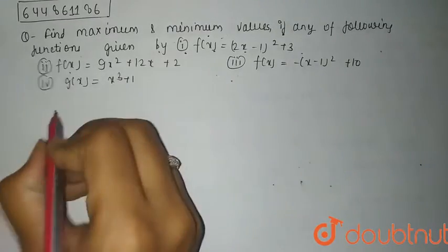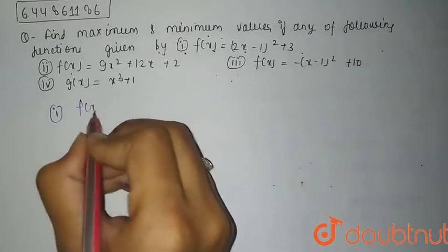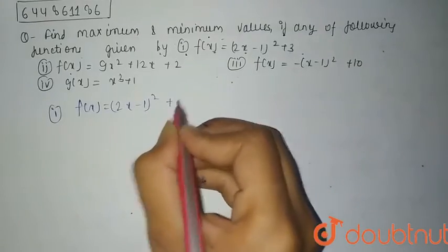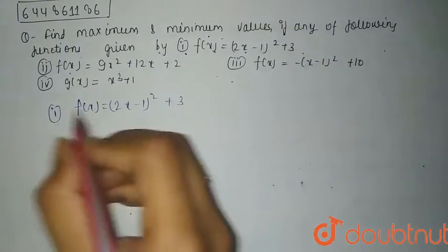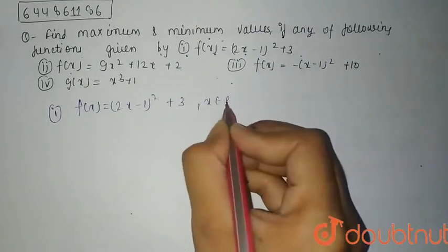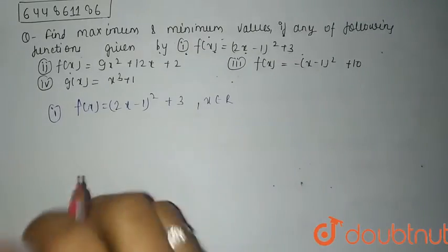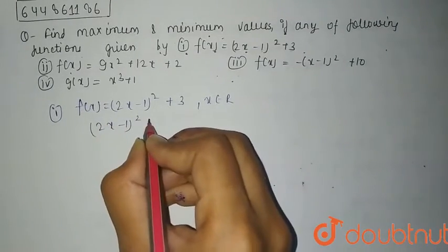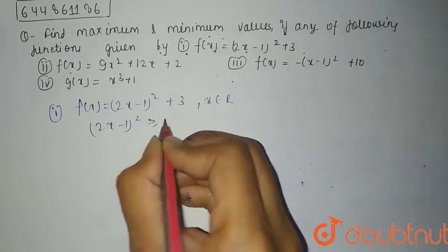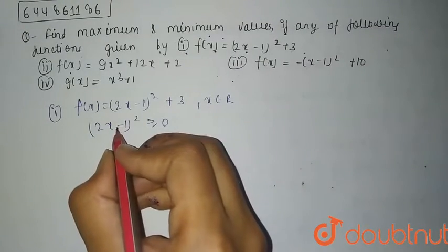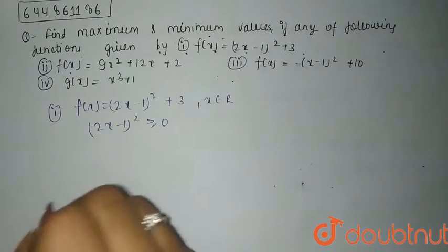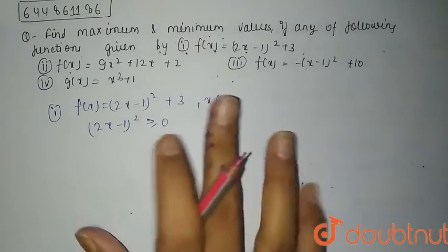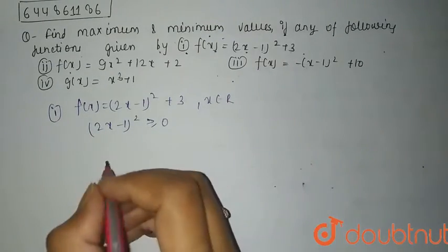The first function is f(x) = (2x - 1)² + 3. For each x belonging to R, that is real numbers, (2x - 1)² will always be greater than or equal to 0, because even if you put x = -1, the square will always be positive. So it will be greater than or equal to 0.